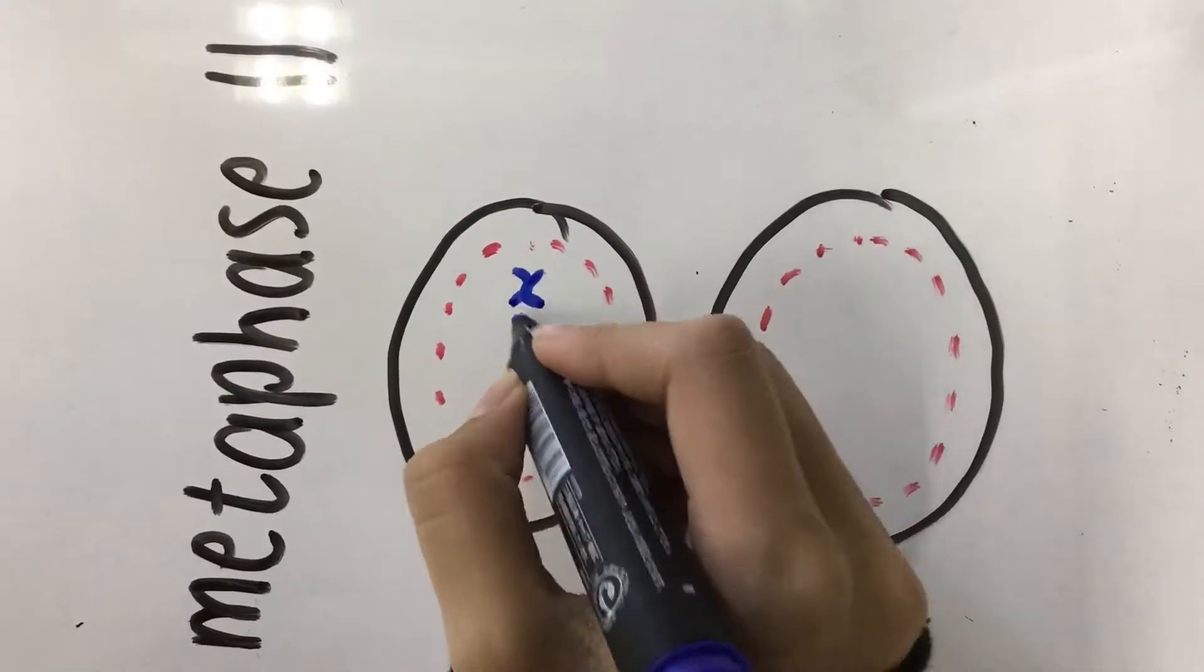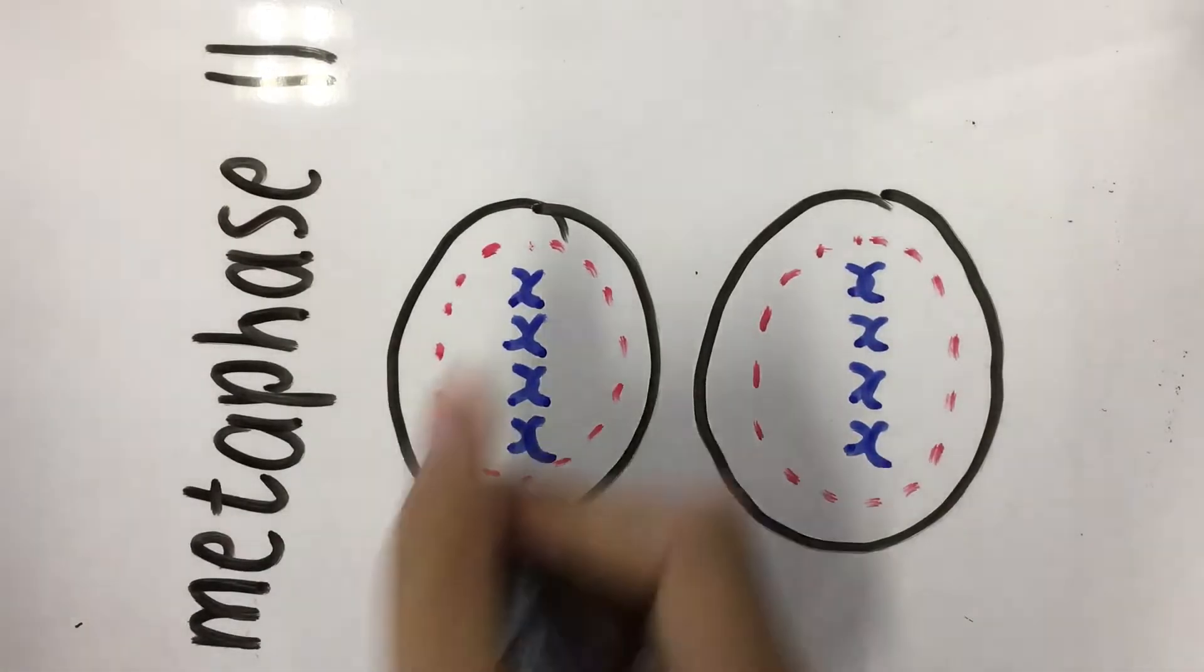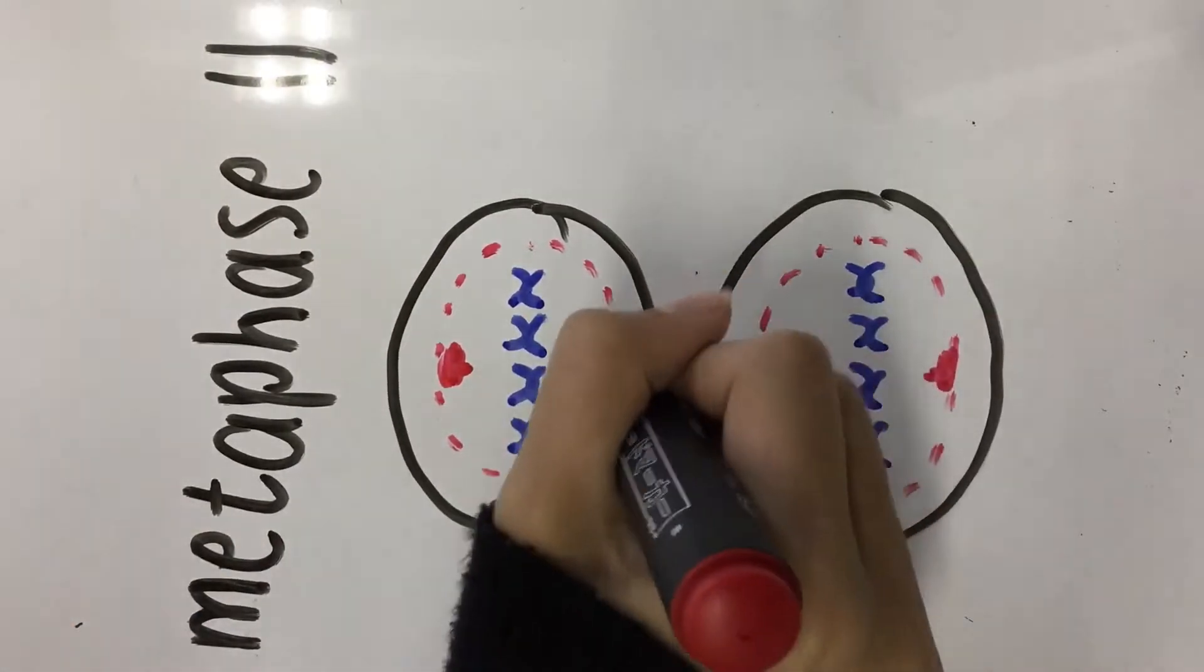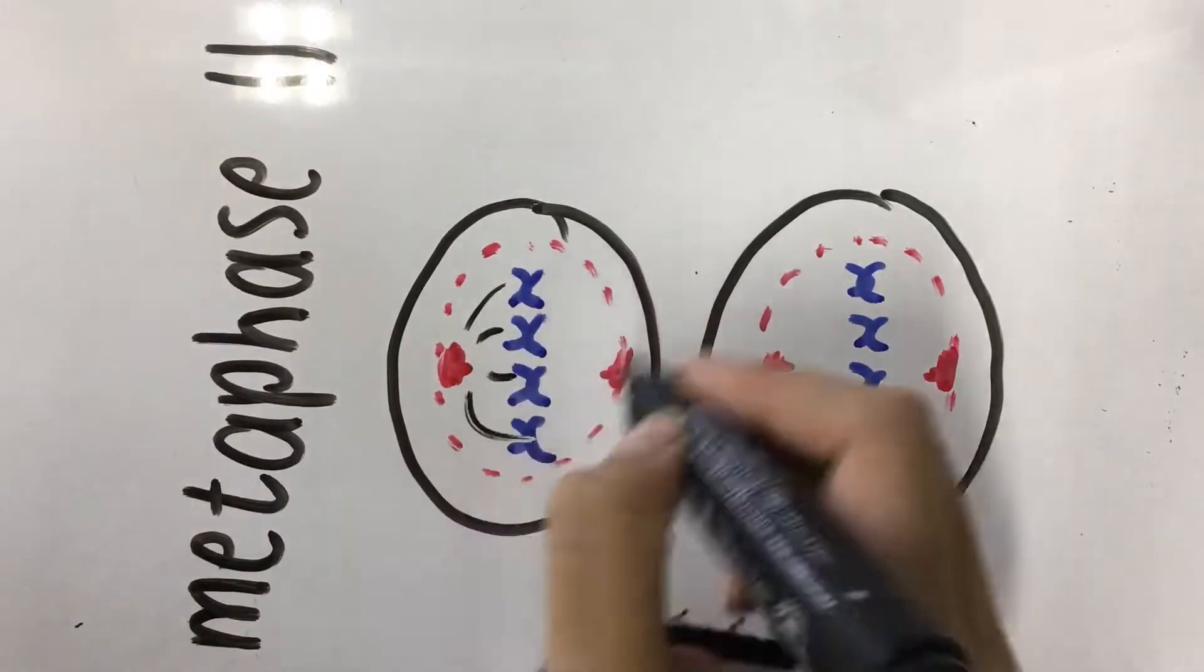Next comes metaphase 2, where the chromosomes are moved by motor proteins to form a line across the equator of the cell. Chromosomes are attached to microtubules.